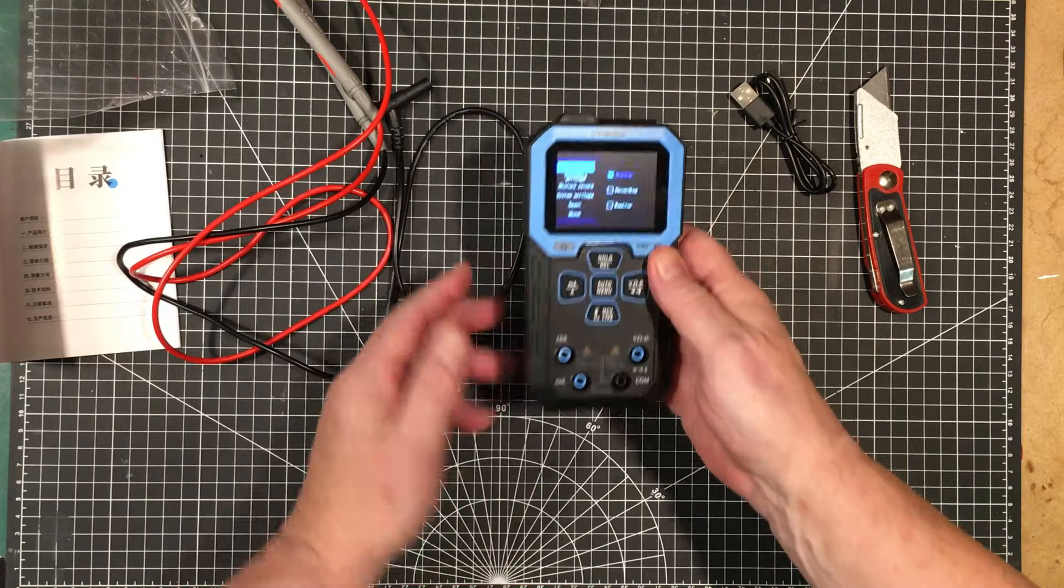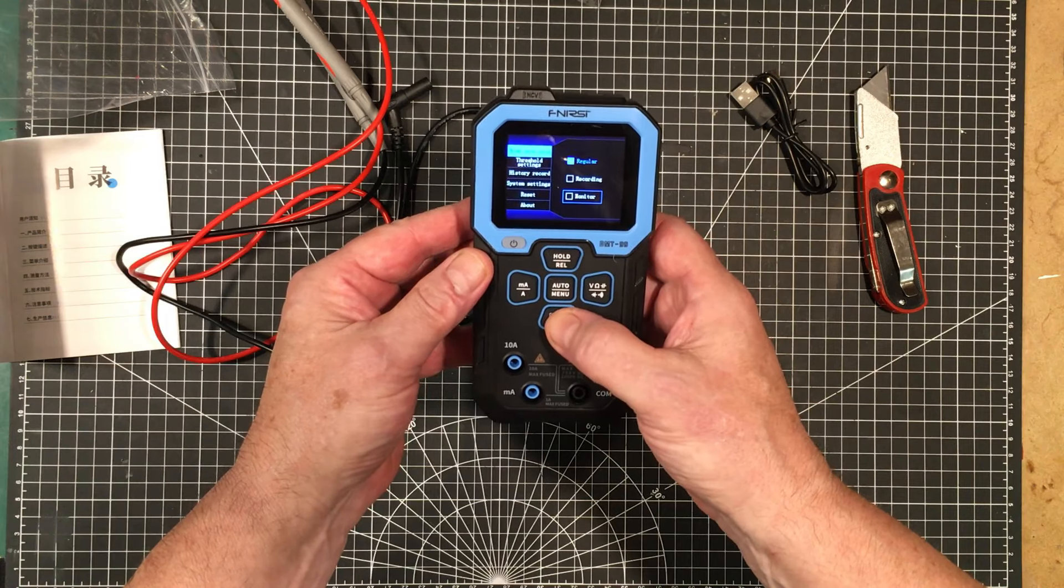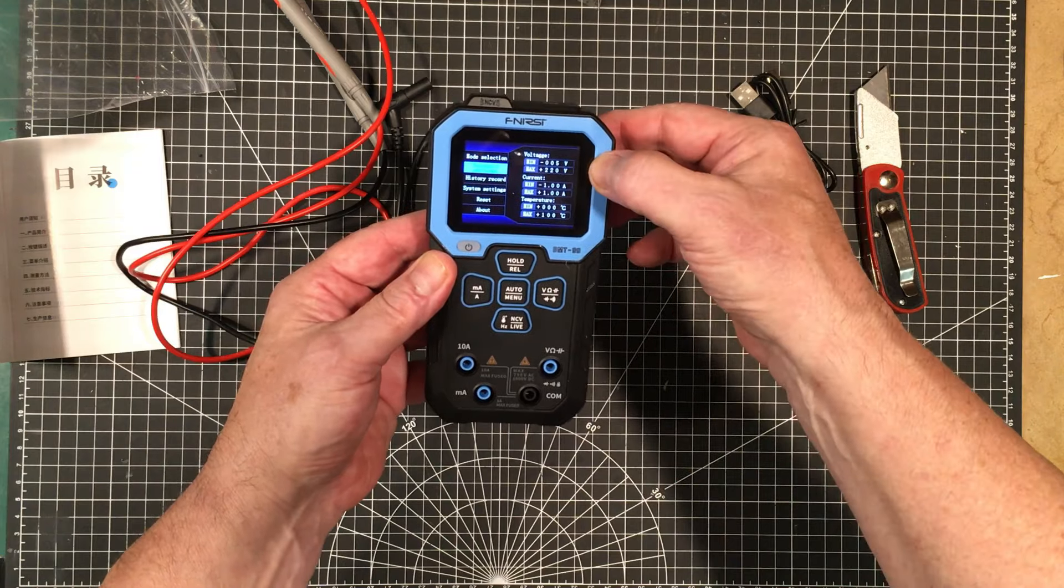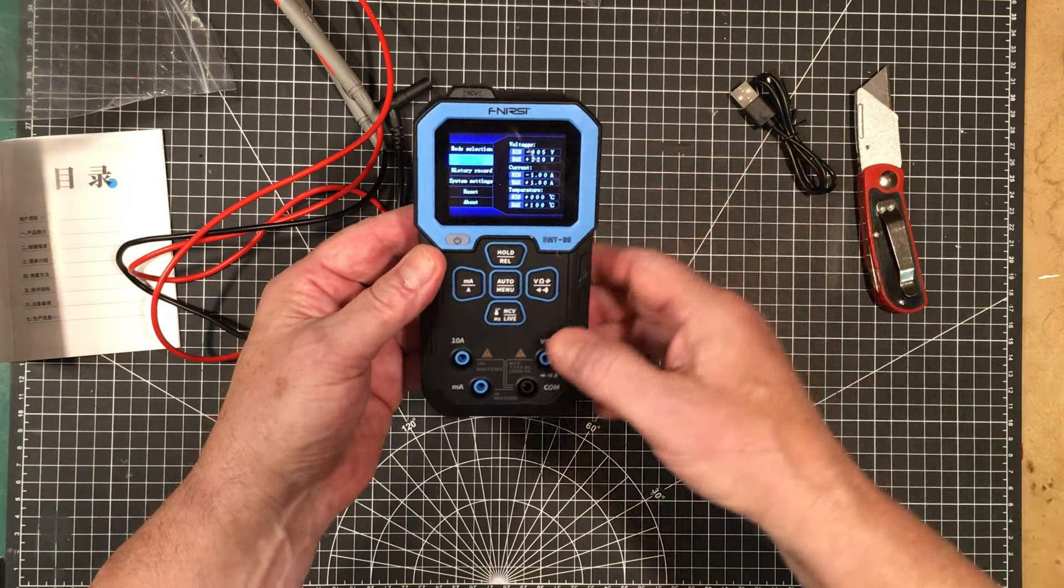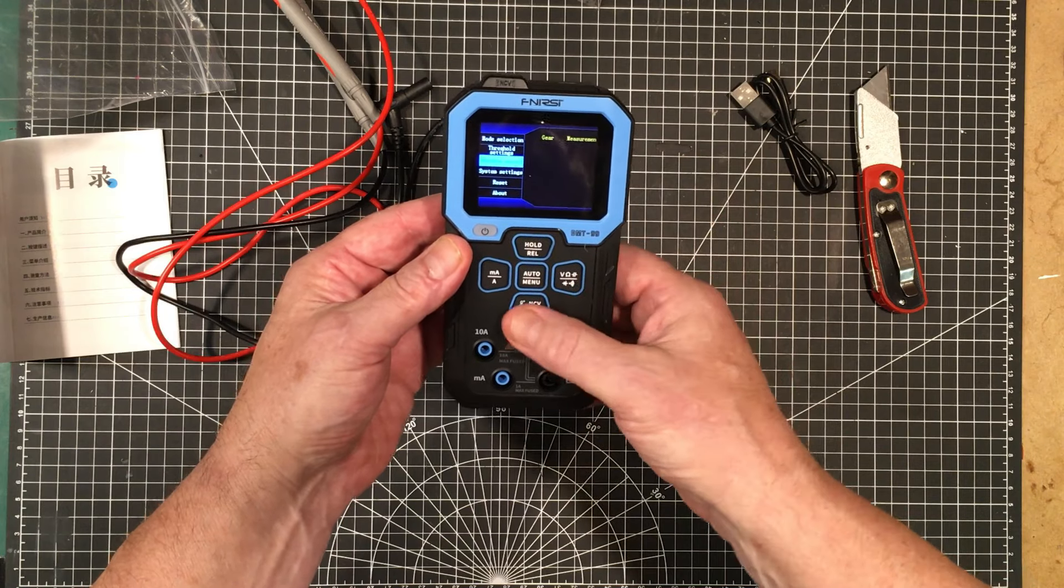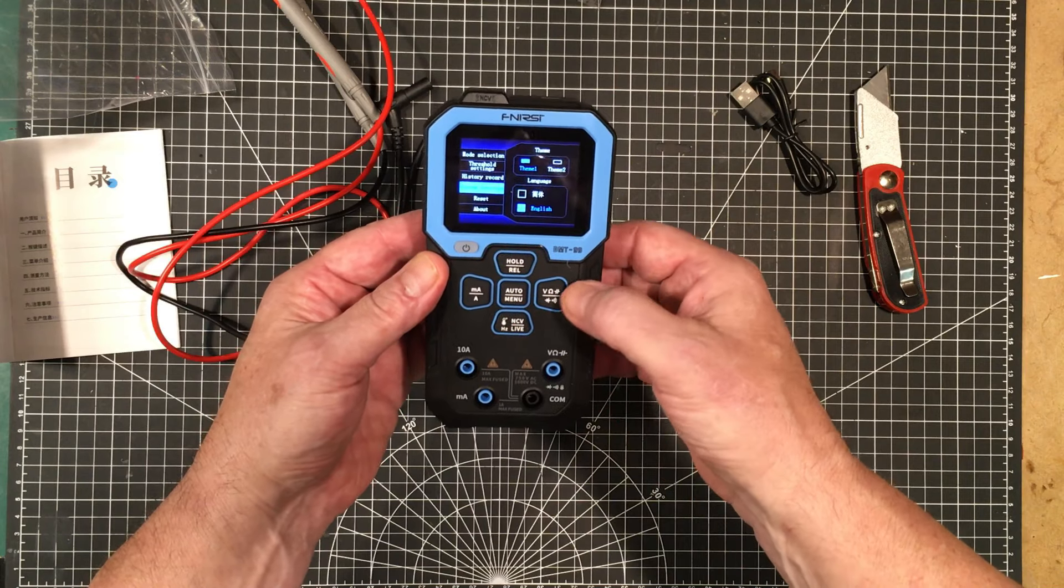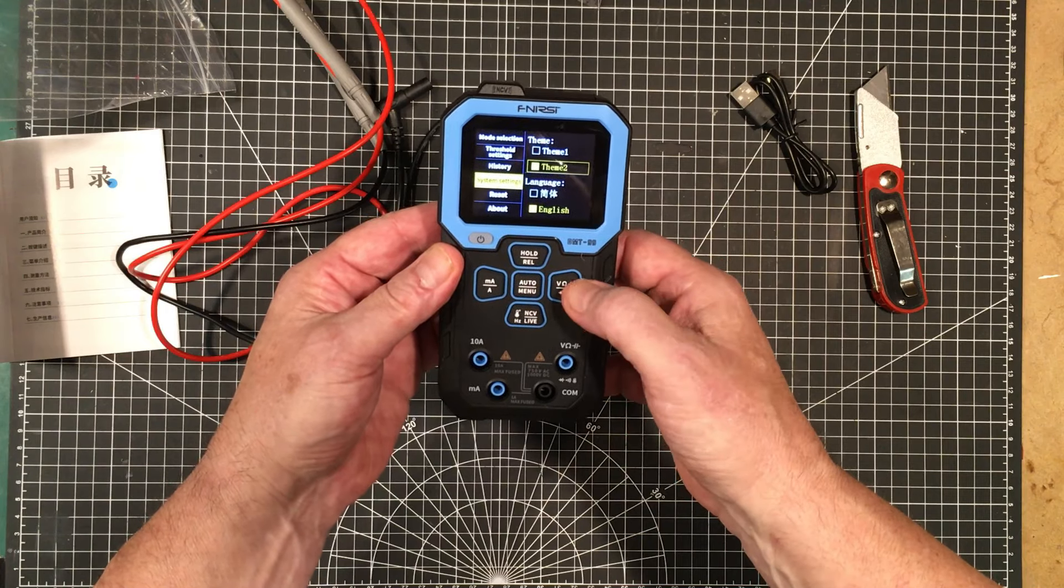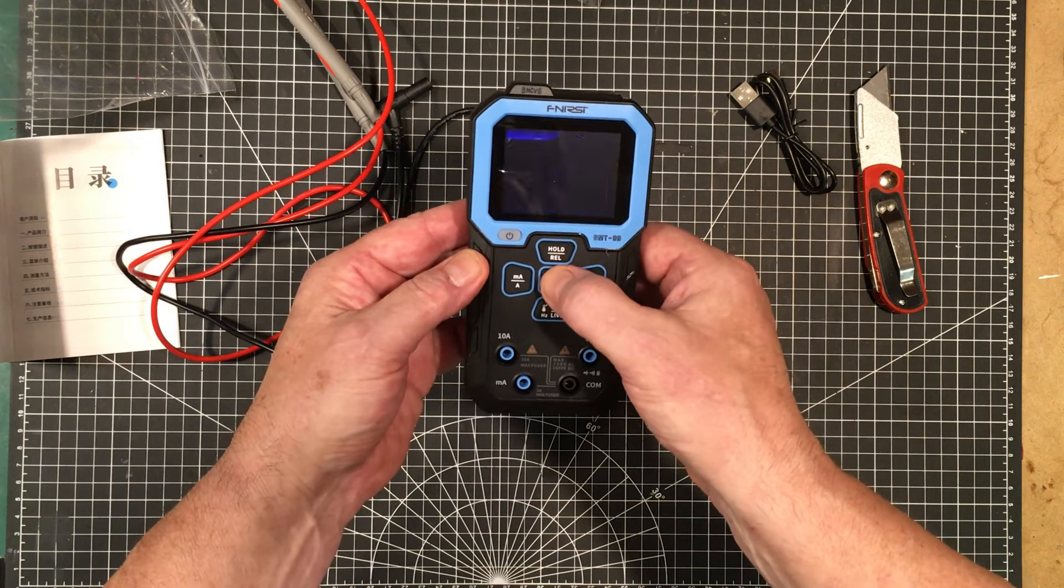Okay so we've got different modes here. Mode selection, regular, recording, monitor, and threshold settings. In the monitor mode you set it to various thresholds for voltage, current, and temperature. And in that mode it'll warn you if it exceeds either minimum or the maximum either direction. History record. We don't have any records yet. System settings. You got a couple of themes here. I prefer the other one.